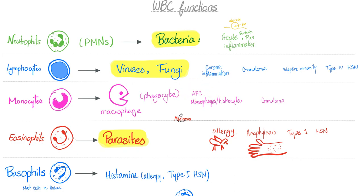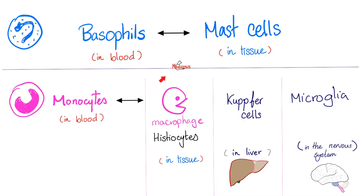Eosinophils defend your body against parasites and are involved in allergic reactions and anaphylaxis — type-1 hypersensitivity. Whenever you think eosinophils, remember: parasites, allergy, anaphylaxis. Basophils release histamine, which is involved in allergy and type-1 hypersensitivity. When basophils go to tissue, they're called mast cells. Monocytes in the blood become macrophages or histiocytes in tissue — Kupffer cells in the liver and microglial cells in the brain.